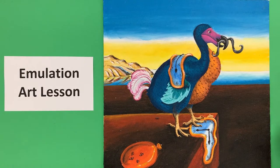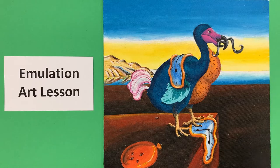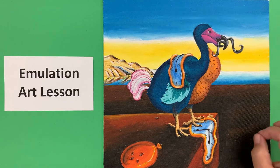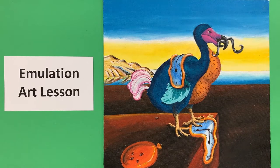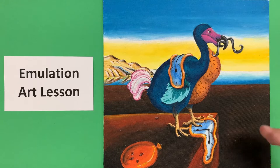I'm making literacy connections with my students so they can take any artist from history and do an alliterative animal in the style of that particular artist. This is a Dali Dodo.